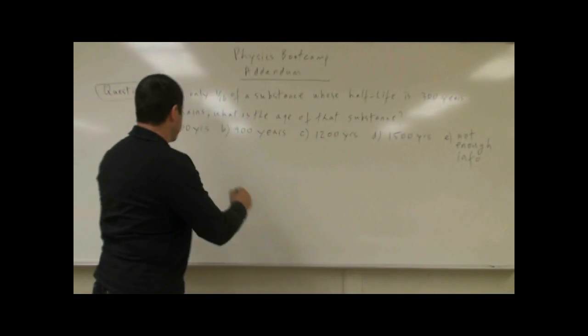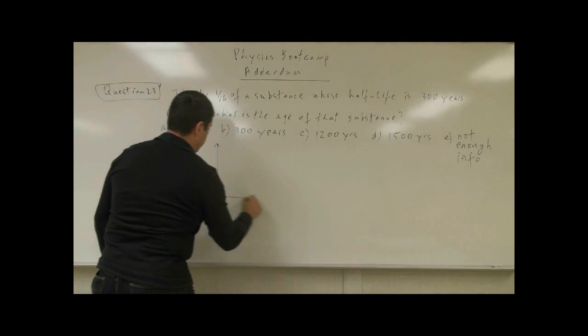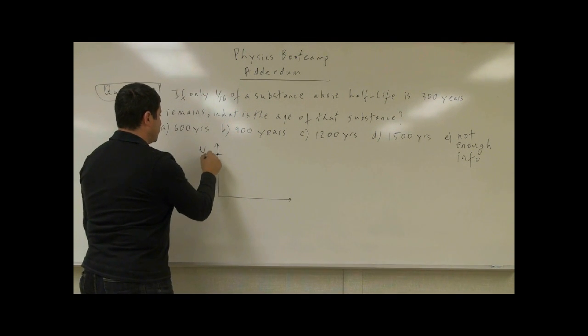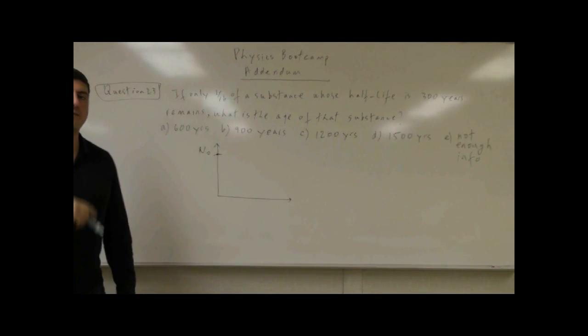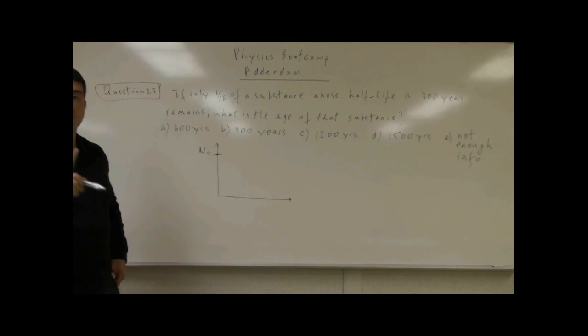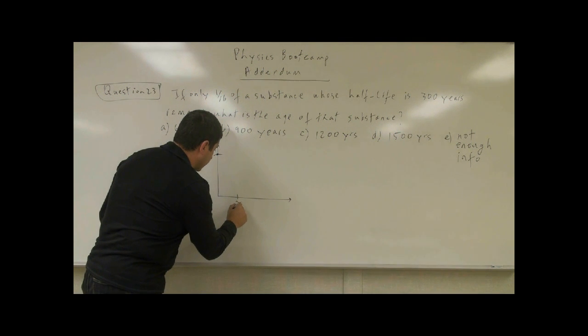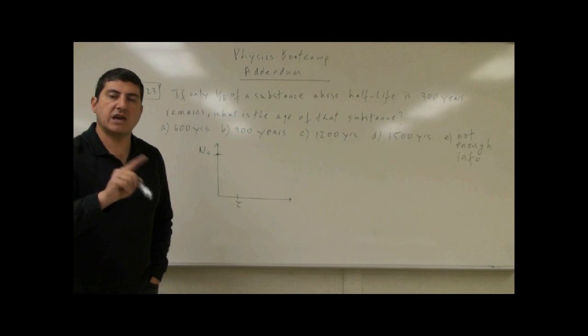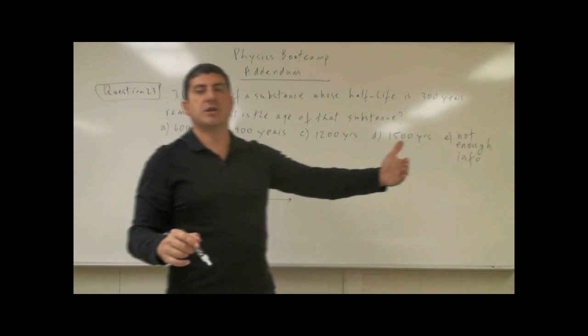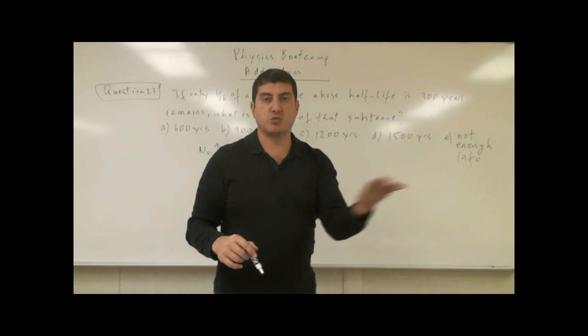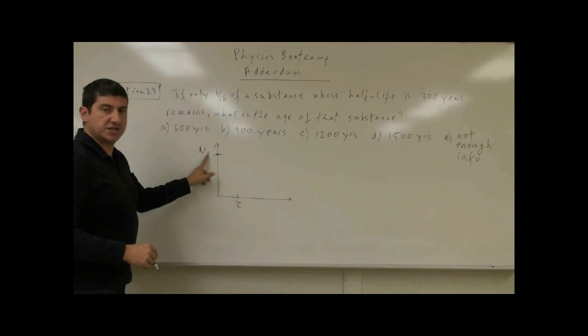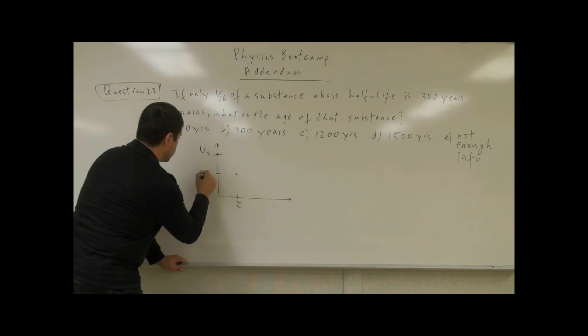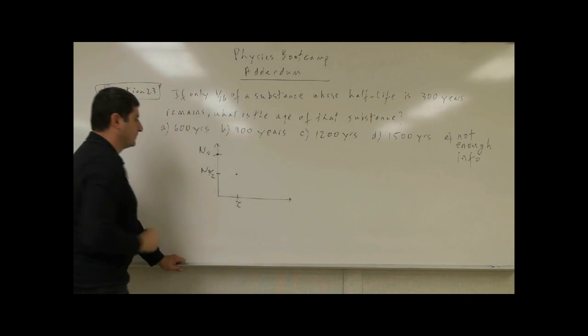So what does that mean? If there is a certain amount of that substance, we usually call that N0. Every half-life, what's going to happen? The concept of the half-life, we usually call the half-life tau, the Greek symbol tau. Every half-life, half of the original remaining substance will be left. So if it starts out with N0, after one half-life, you will only have half of that. So it's going to be N0 over 2.